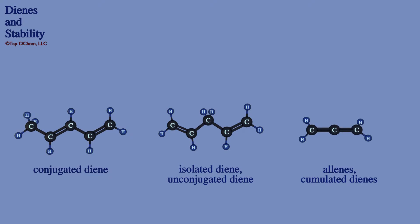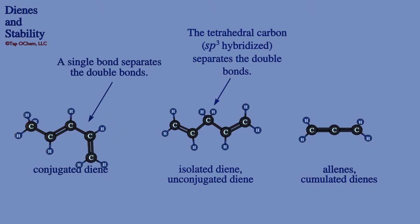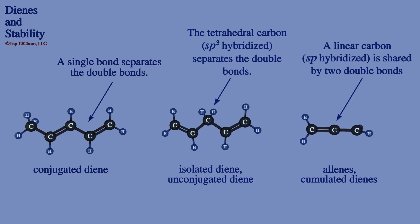An isolated diene in the center of the screen is unconjugated and has carbon-carbon double bonds that are separated by at least one tetrahedral carbon. The conjugated diene, on the left, has carbon-carbon double bonds that are only separated by a single bond. Allenes are compounds that have two double bonds that share one carbon. That carbon has a linear geometry, so it is sp-hybridized. Allenes belong to the class of cumulated dienes.